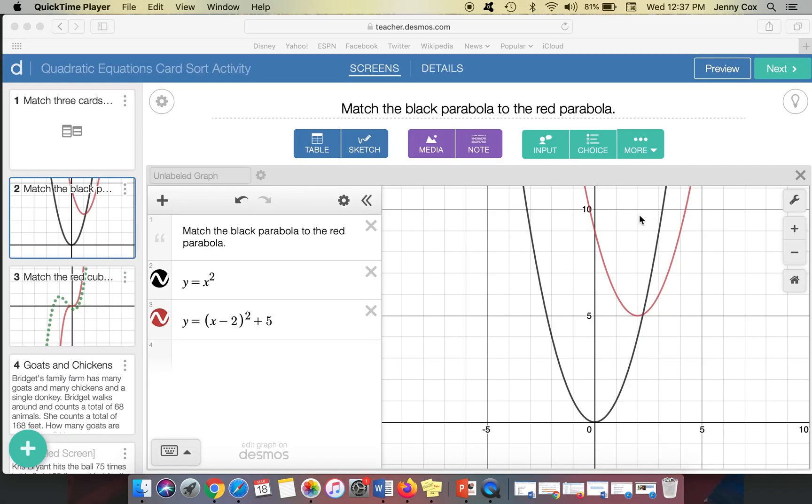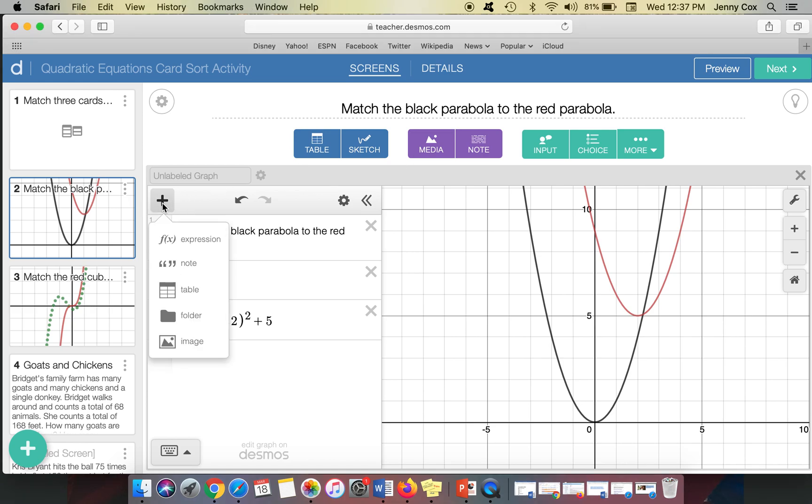Suppose you want it so that you can't click on anything on the red one, and that this code is hidden from students. So just like we did before with adding a note, you can add a note, a folder, a table, whatever you want here. So I added a note that says match the black parabola to the red parabola. So that way, I don't have to have it off to the side and students can still interact with this graph.